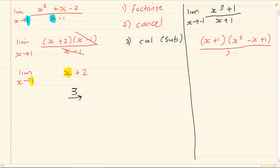Limit x tends to be negative 1. We can then cancel and we're left with the limit x tends to be negative 1, x squared minus x plus 1.